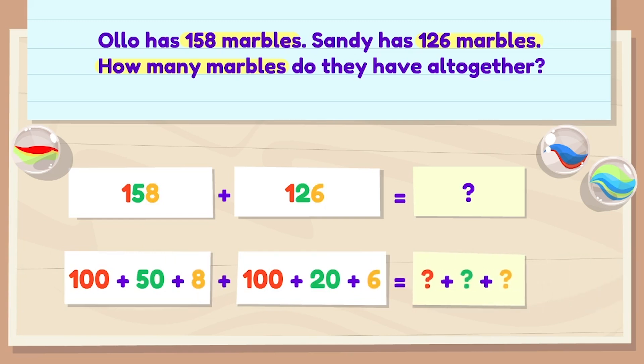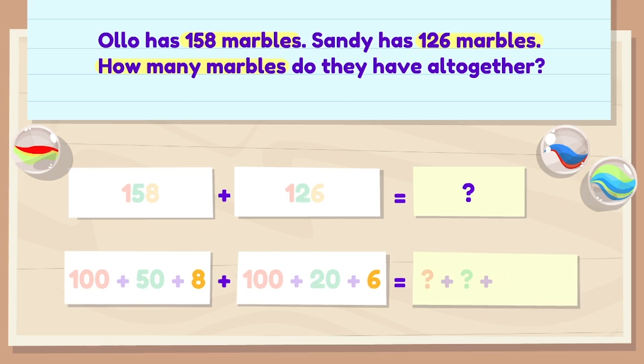First, let's add the ones. 8 plus 6 equals 14. That is 1 ten and 4 ones.